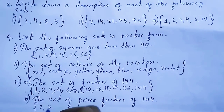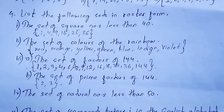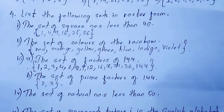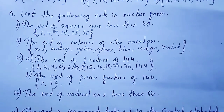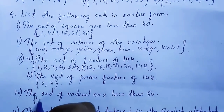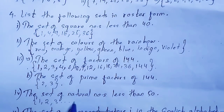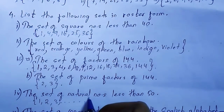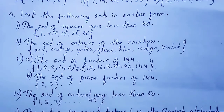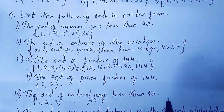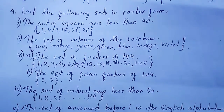Question 4: the set of natural numbers less than 50. Natural numbers start from 1, so the set goes 1, 2, 3, and so on up to 49, since it is less than 50. So these are the elements of the set of natural numbers less than 50.